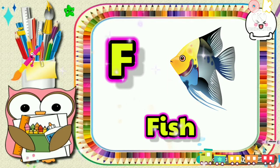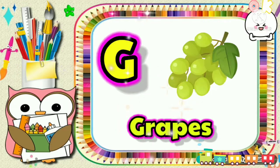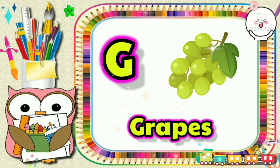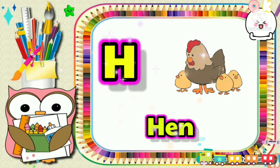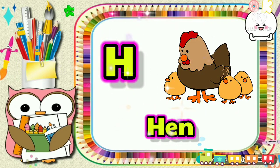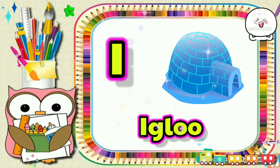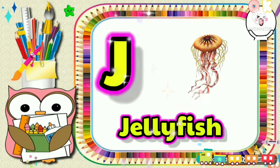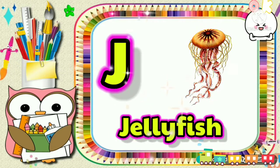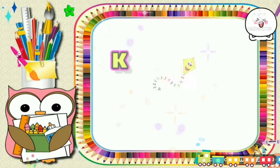F for fish, G for grass, S for hen, I for igloo, J for jellyfish.